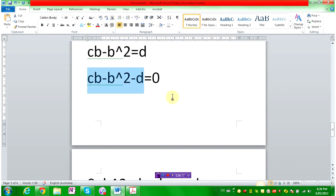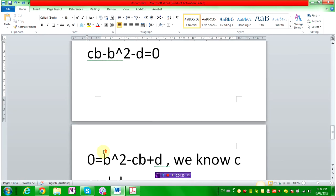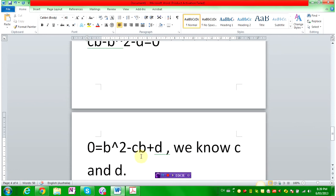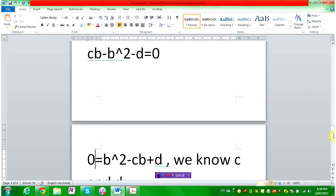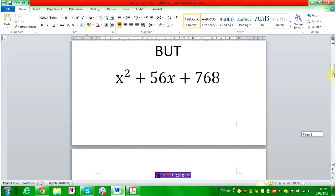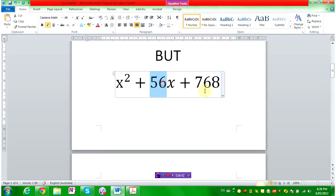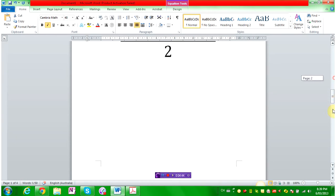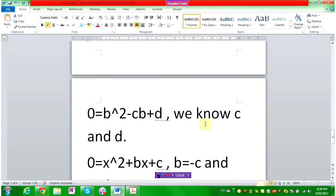Here. I moved it. I minus cb both sides. I plus b squared both sides. And I plus d both sides. So, it becomes b squared minus cb plus d equals to 0. And we know C and D. Why do we know C and D? C and D is, what are they? They are 56 and 768. So, just to keep that clear. Keep it in mind. We know C and D.